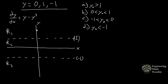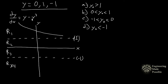For region 1 (y > 1), plug in y = 2: the rate of change is 2 - 2³, which is negative, so the function slopes downward. For region 2 (between 0 and 1), plug in y = 0.5: 0.5 - (0.5)³ is a positive number, so the rate of change is positive and the function slopes upward.